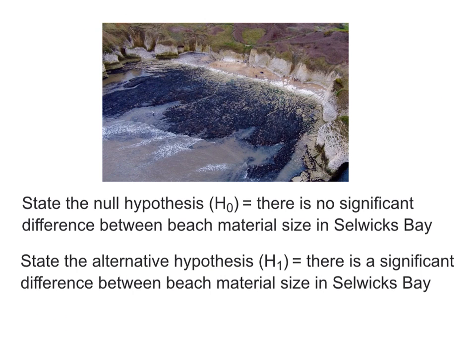So let's return to our null hypothesis, which we can now reject. And therefore, we can accept the alternative hypothesis: There is a significant difference between beach material size in Selwick's Bay. And because we were looking at differences between the north and the south end of the beach and beach material size, we can categorically say that beach material, the size of it does differ. And we have statistically proven that with chi squared. It's rather a long video to explain chi squared, but I hope if you've watched it and have followed it stage by stage, you will now be able to apply it to your own investigation.